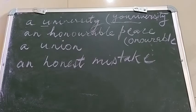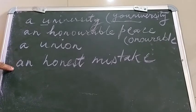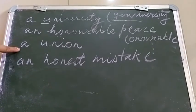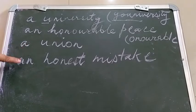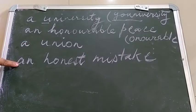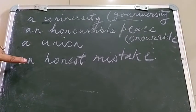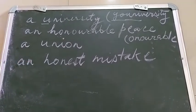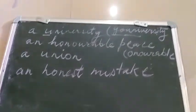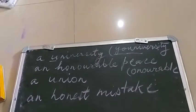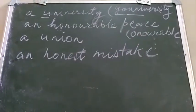Similarly with the third example and the fourth example, the same rule applies. For union, we say A union, not An union. And for honest, we say An honest, not A honest. So the article we have used here is correct.